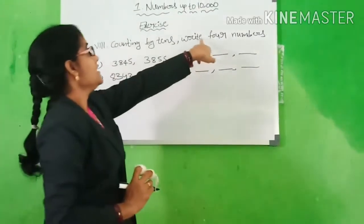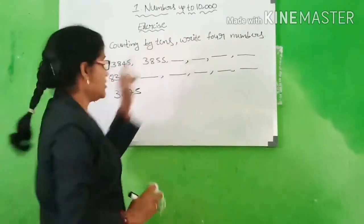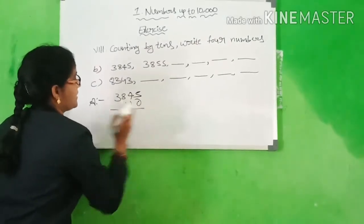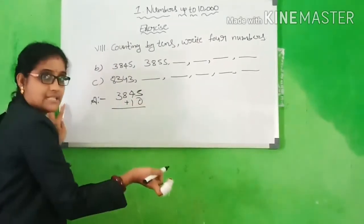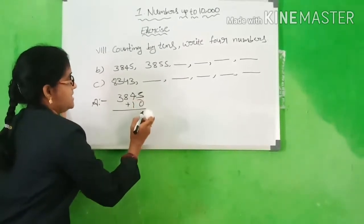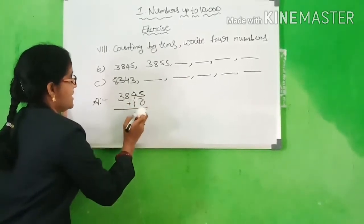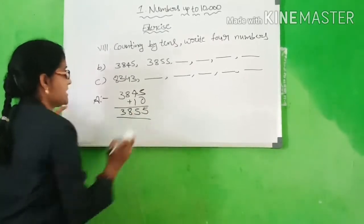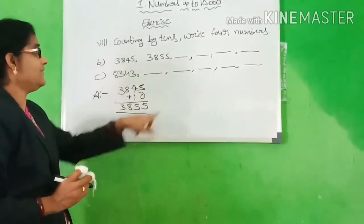What is given here? Count by 10. You have to add 10, and we will get the next 10s. 5 plus 0 is 5, 4 plus 1 is 5, 8, 3. What is the answer? 3,855.